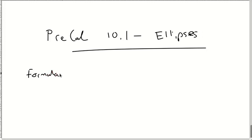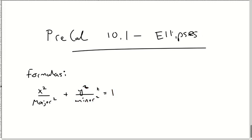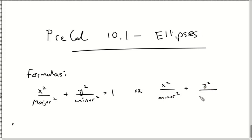My handwriting is not going to be perfect because it's brand new to me. So I've got x squared over major squared plus y squared over minor squared. I'm going to explain it here in a second, still getting used to this thing. I have one more formula: x squared over the minor squared plus y squared over the major squared. Writing major and minor every time is going to be kind of tough, so I use little M and big M to signify what I'm talking about.